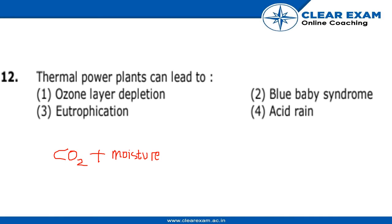That compound is H2CO3, which is called carbonic acid. Carbonic acid is responsible for acid rain — therefore, the answer is acid rain.